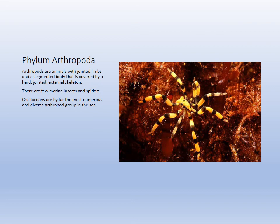Arthropods include sea spiders — we do have some in Tampa Bay. There are very few marine insects or spiders. There's the horseshoe crab, which is kind of alone, a leftover from Cambrian times when trilobites were flourishing. Crustaceans are by far the most common class.